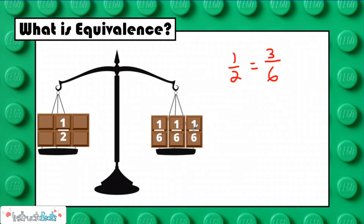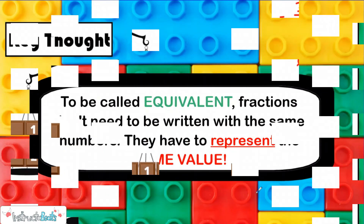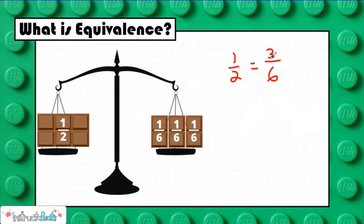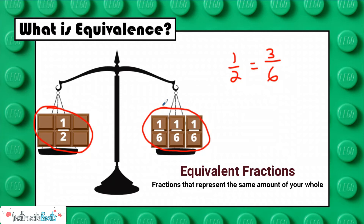Remember, the numerator tells us how many unit fractions we need to build this fraction. So both of these fractions represent the same amount of the whole. I just needed more one sixths because when I split it into six, my pieces were smaller. My unit fraction of one sixth is smaller than my unit fraction of one half, so I needed more of them. I really love this example because it leads us into our key thought: to be called equivalent, fractions don't need to be written with the same numbers — they have to represent the same value. One half doesn't look the same as three sixths; the numbers are different. But one half represents this much of my chocolate bar, and three sixths represented the exact same amount. That's what equivalent fractions are: fractions that represent the same amount of your whole.